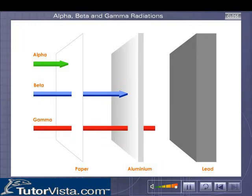The gamma rays move with a very high velocity. They have high penetrating power. They can pass through a thick aluminium foil but cannot pass through lead.